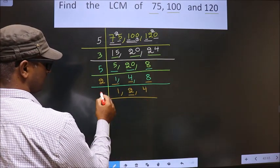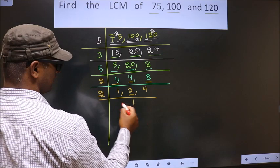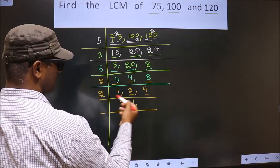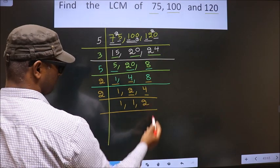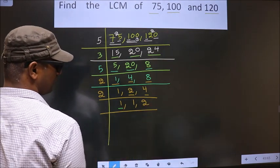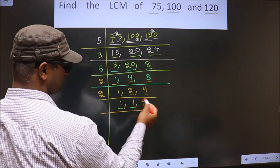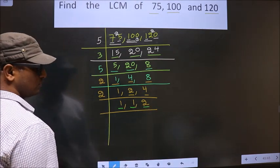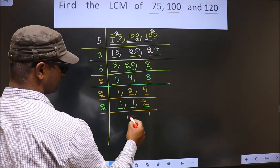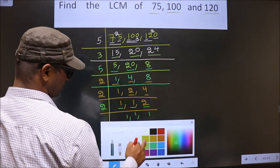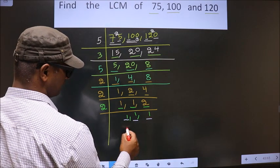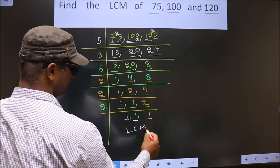Now we have 2. 2 is a prime number, so we take 2 once, which is 2. Now we have got 1 in all three places, so now our LCM is ready.